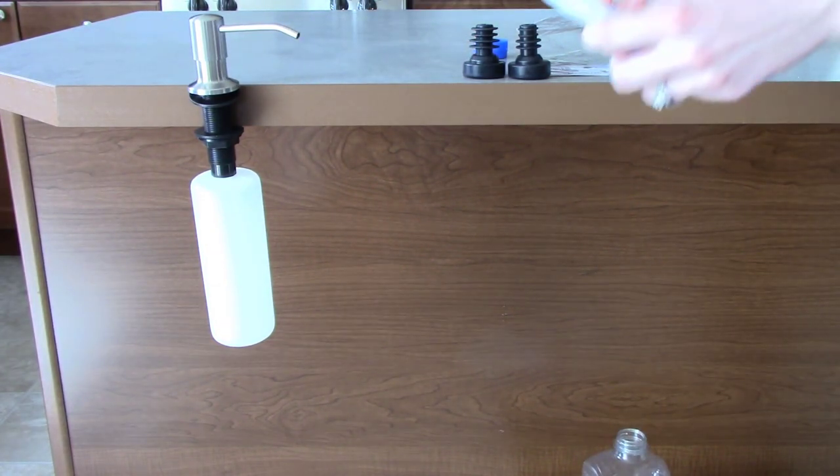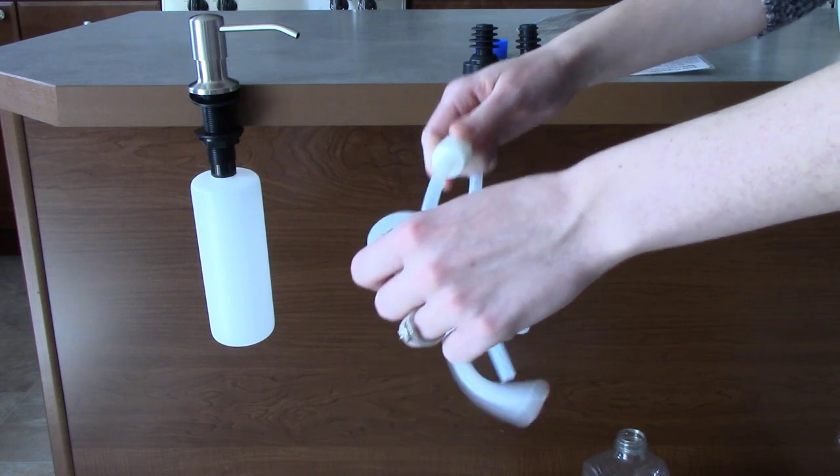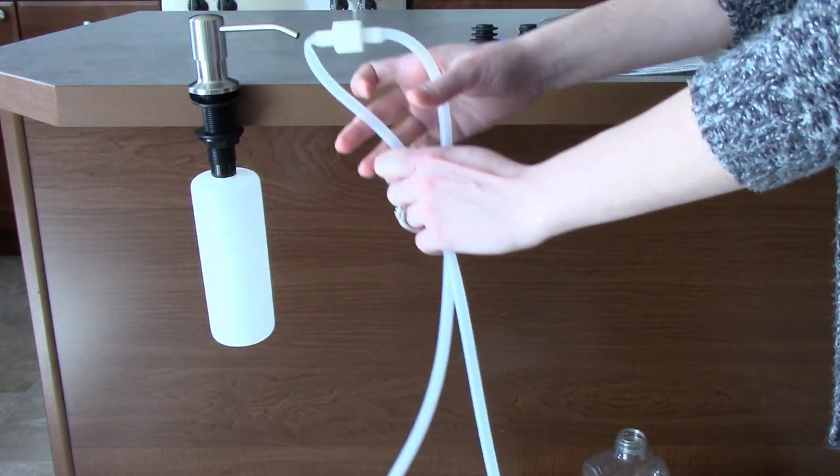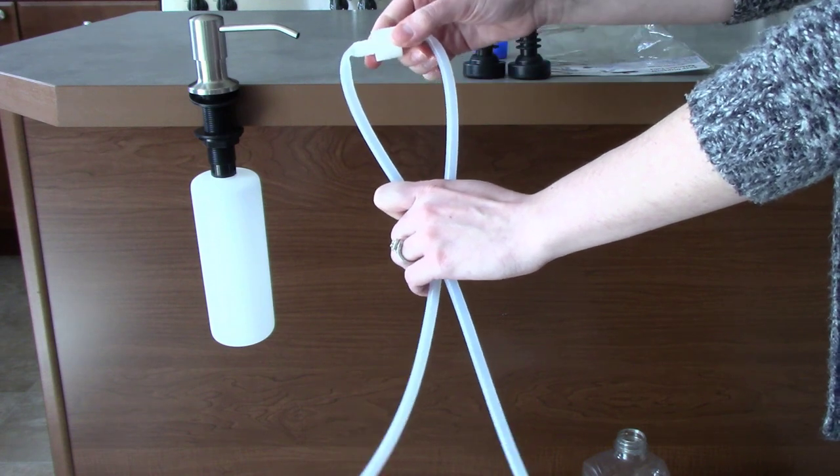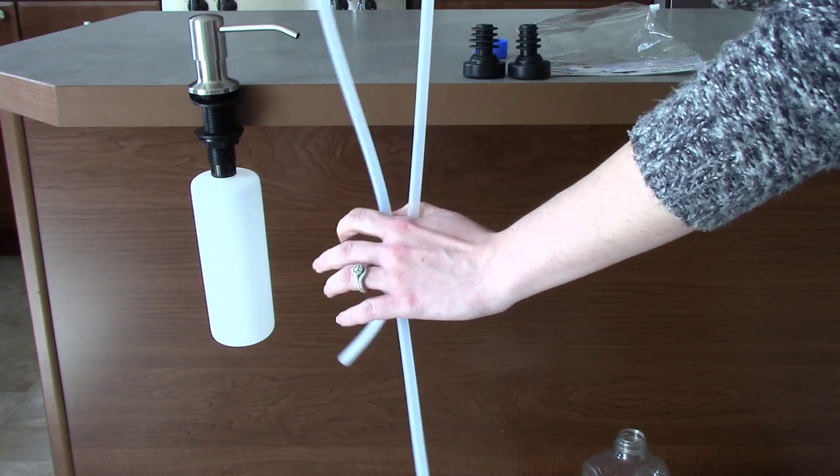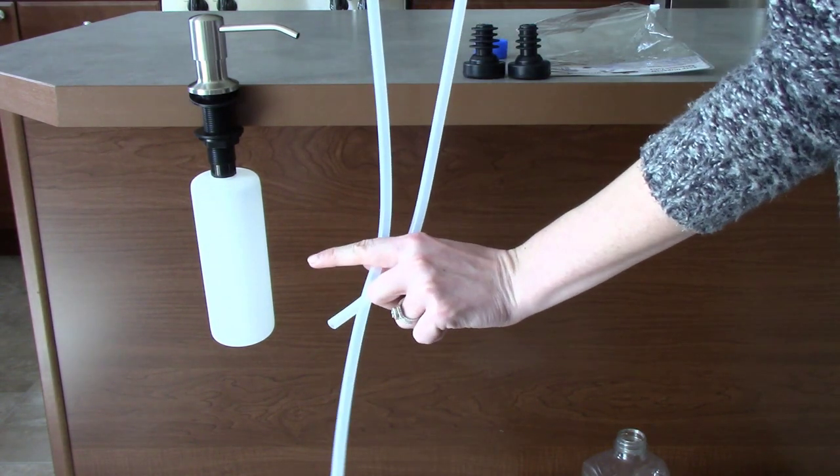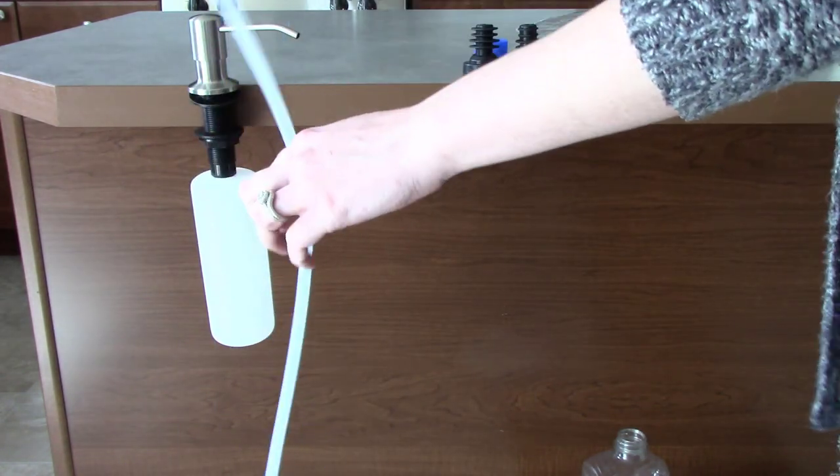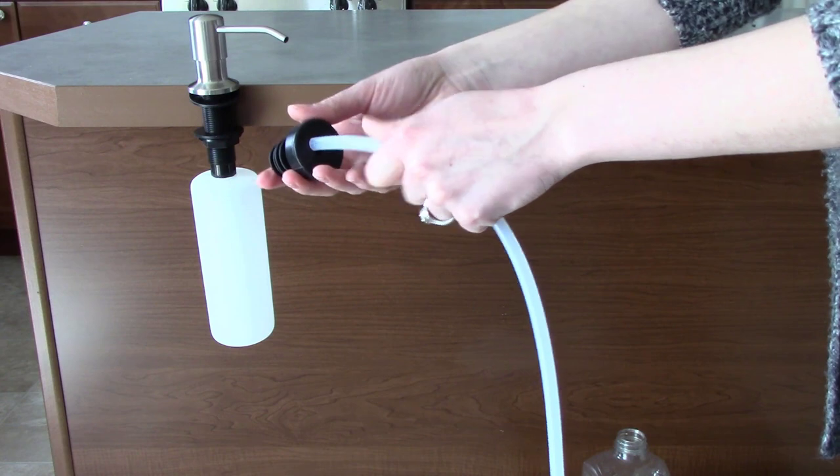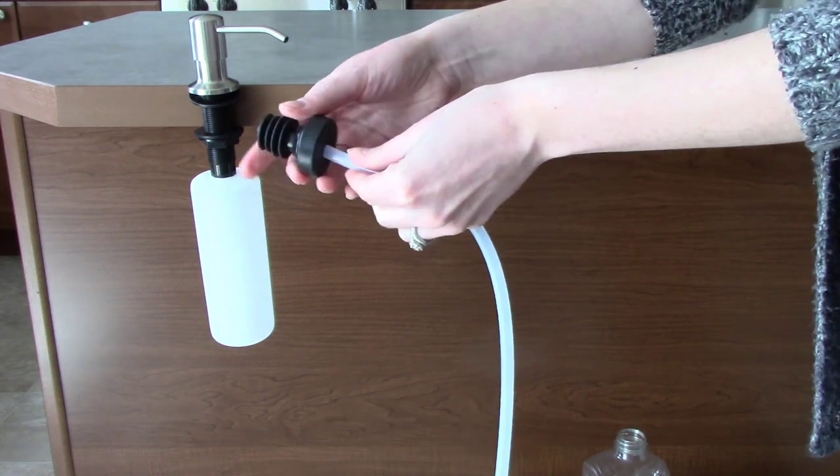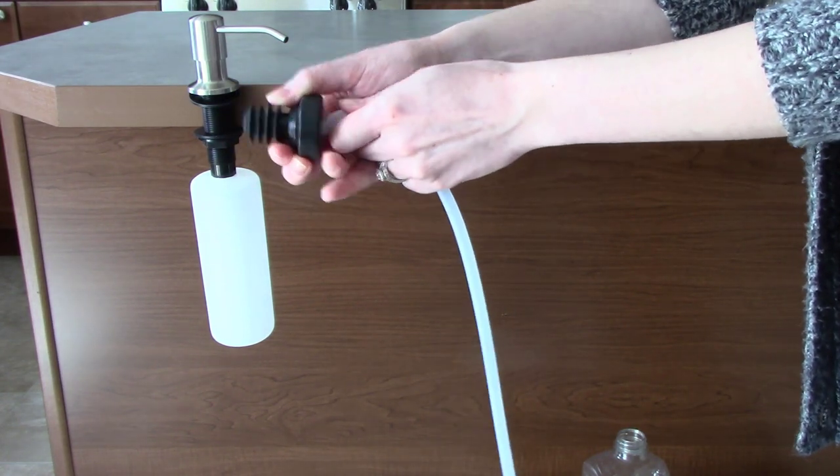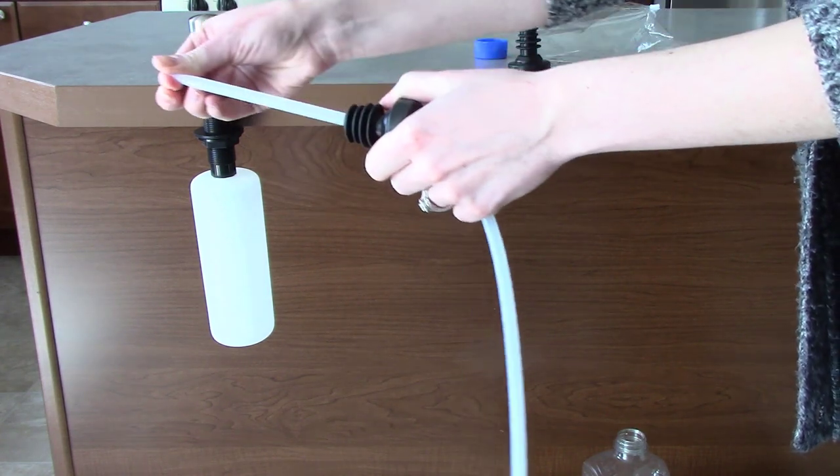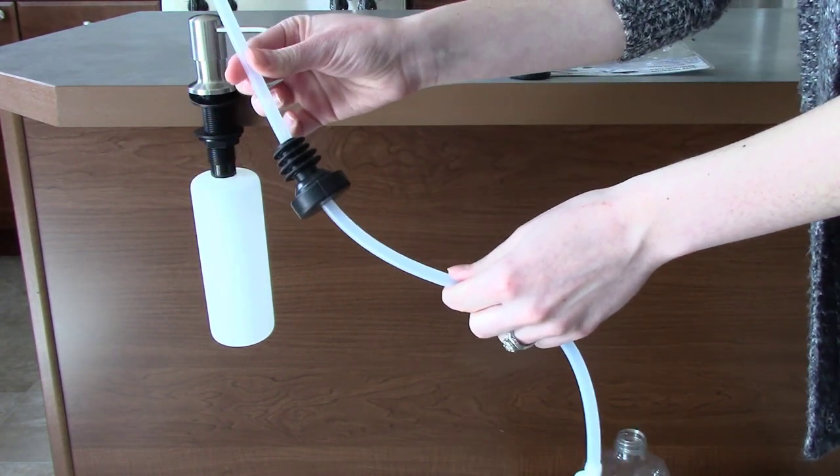Once you pick your bottle stopper, you will want to thread it on the longest end of tubing, as you can see here. Just thread it through like so. Make sure to pull the stopper up high enough so the tubing will reach the bottom of your soap container.